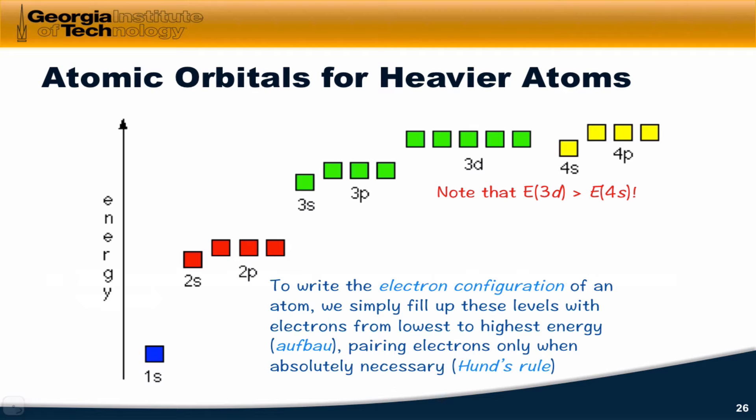So here's kind of a scaffold for the atomic orbitals of the heavier atoms. And to write what's called the electron configuration of a heavier atom, we simply fill it with electrons from lowest to highest energy. This is consistent with the Pauli exclusion principle, and it's known as the Aufbau principle, which is German for building up.